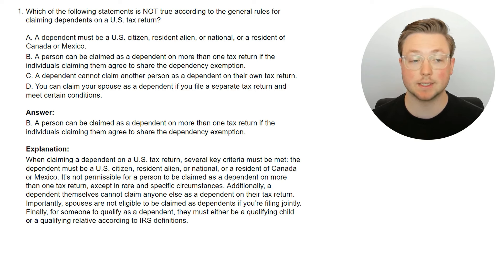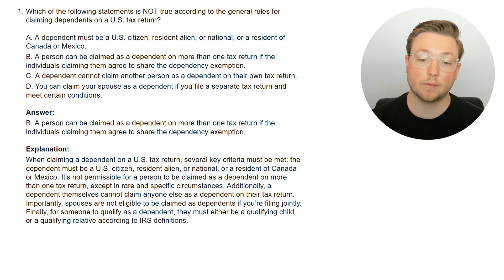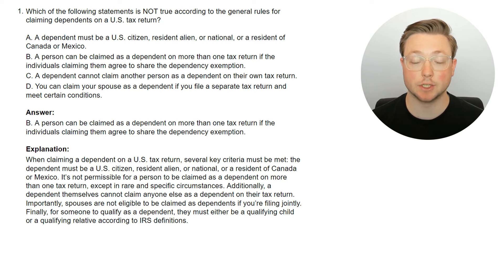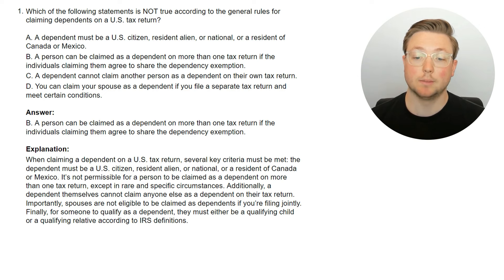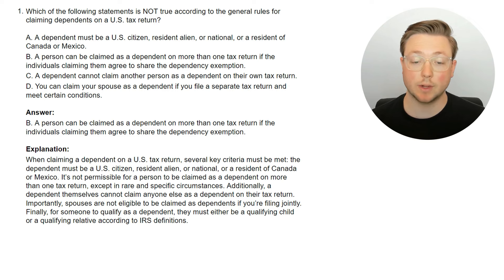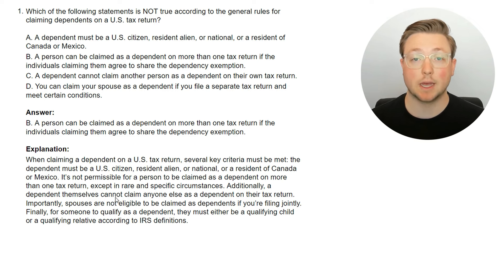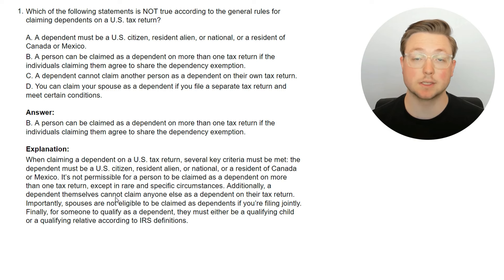Finally, for someone to qualify as a dependent, they must either be a qualifying child or a qualifying relative according to IRS definitions. We're going to learn about those two things — qualifying child and qualifying relative definitions — in the next questions. These are the basic requirements, whether they're a child or a qualifying relative, for somebody to be counted as a dependent on your tax return.